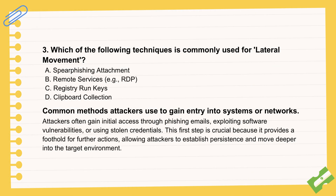Another question brings up lateral movement, mentioning techniques like remote services — RDP being an example. Lateral movement is exactly what it sounds like: moving sideways, spreading out within a network after you've got that first entry point. Attackers don't usually land right on the final target system — they need to look around, find the valuable systems, get access to more machines. Using RDP from one compromised computer to another is how they move deeper into the network.